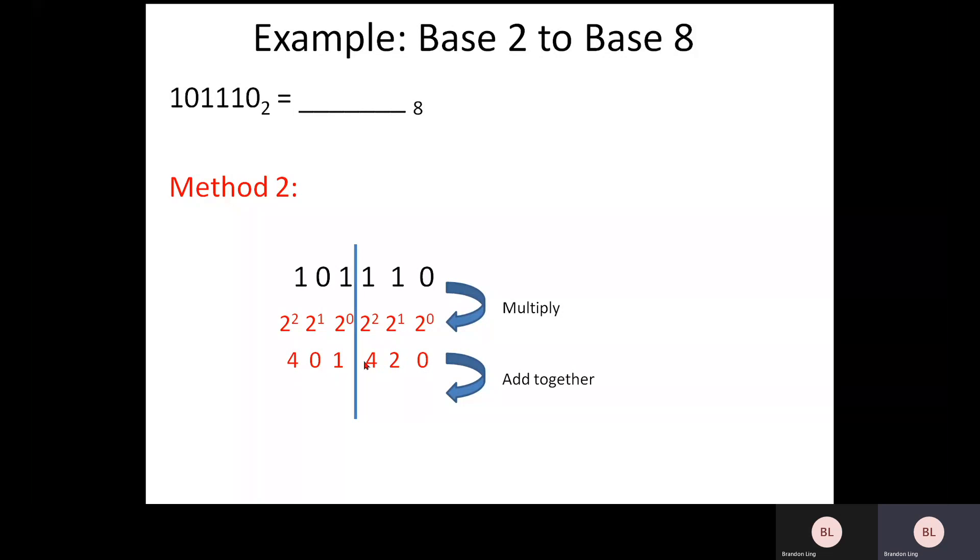Okay, so in this first bar here, you can add 4 and 2 together, you get a 6. 4 and 1 together, you get a 5 here. So therefore, your final answer will be 56 in the base of 8. That's the final answer.